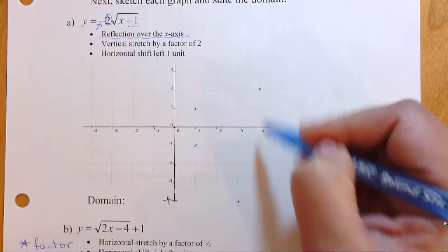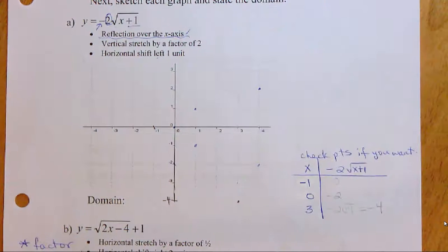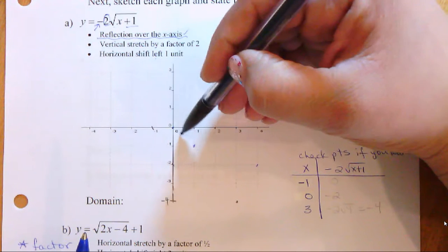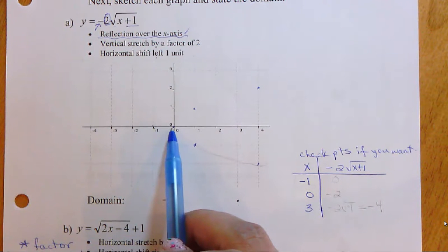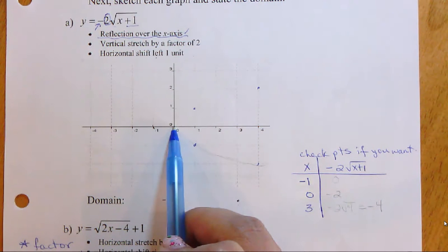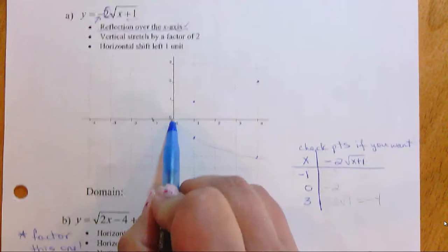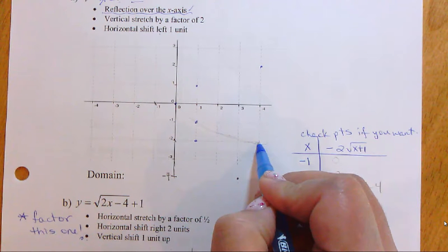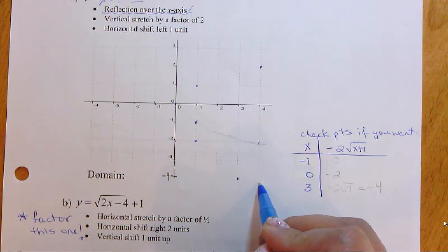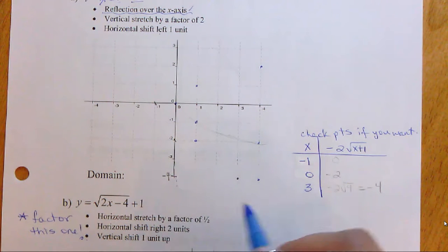Reflecting over the x-axis: the origin stays, the point at one moves down, and the point at four-two moves down. That takes care of our reflection. Then applying the vertical stretch by a factor of two means all y values are multiplied by two. Zero times two is zero, one times two is two, and two times two is four — that last point goes off the graph, so extend your axis and deal with it.